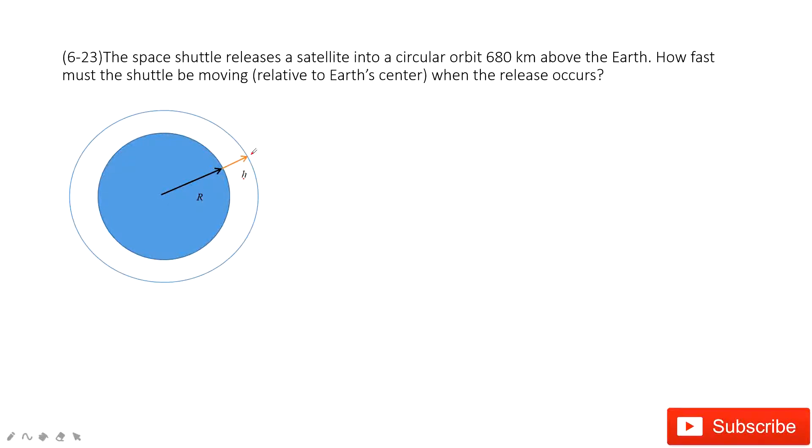So in this way, we can see the space shuttle does circular motion. The radius must be the radius of the Earth plus h. Do you agree? Yes.